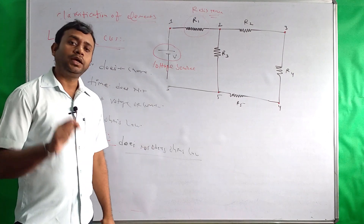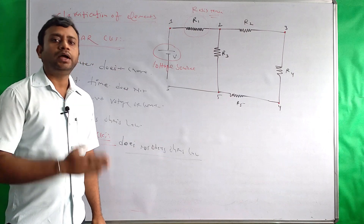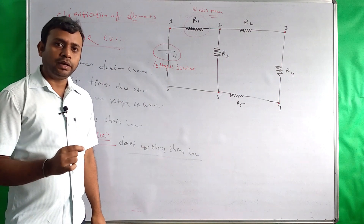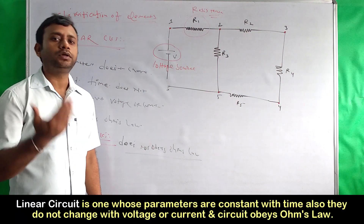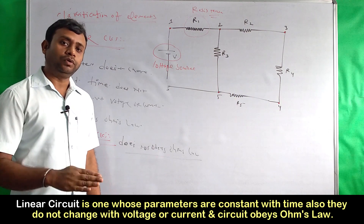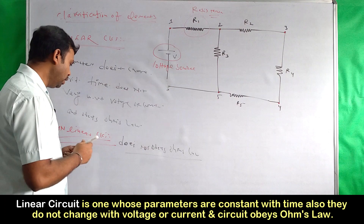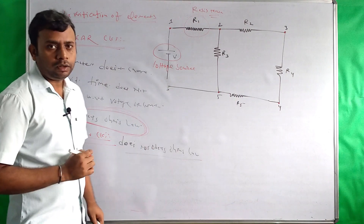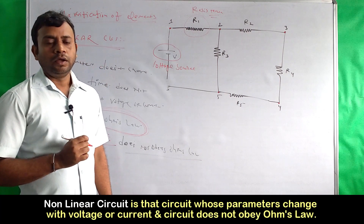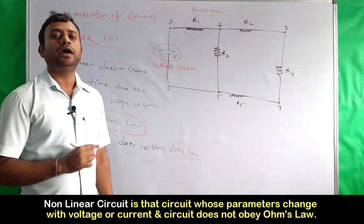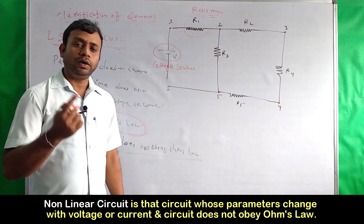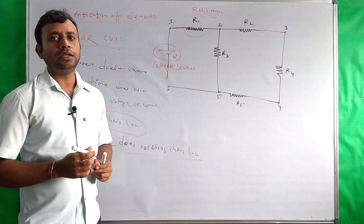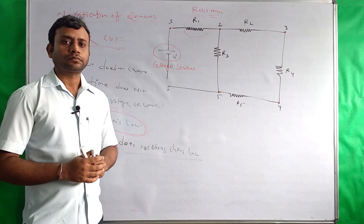Kabhi bhi yadi aapke examinations mein question aa jata hai ki define the linear and non-linear circuit, to aap bilkul clearly define kijiye: linear circuit is a circuit whose parameter does not change with respect to time, or does not vary with respect to voltage or current, and obeys Ohm's law — this is very important. And we can define a non-linear circuit is a circuit whose parameter may change with respect to time or voltage or current variation, and does not obey Ohm's law.